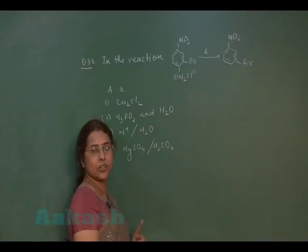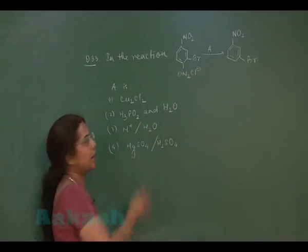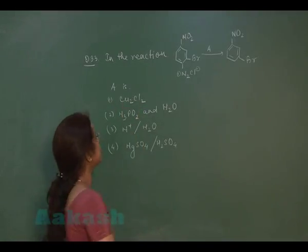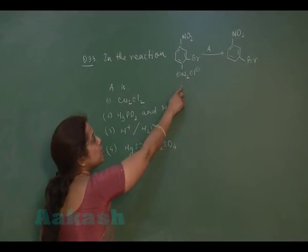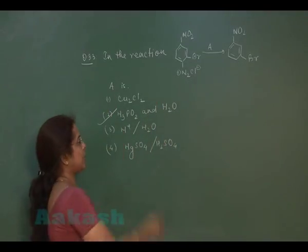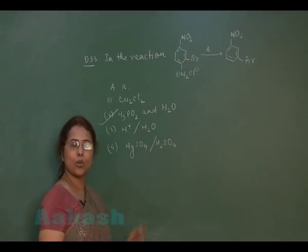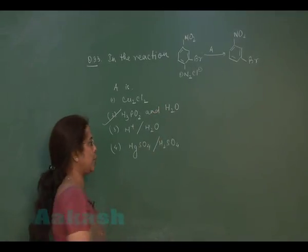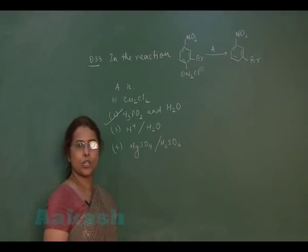The reagent A should be which can reduce diazo group into hydrogen. So if it is Cu2Cl2, no reaction will proceed. If we are using H3PO2 and H2O, then diazo group reduces to hydrogen atom. So this is the correct option. If in the reaction we are using acidic medium or hydrolysis in acidic medium, then diazo group is converted into phenolic group. And if H2SO4 sulfuric acid is used, then no reaction will take place.